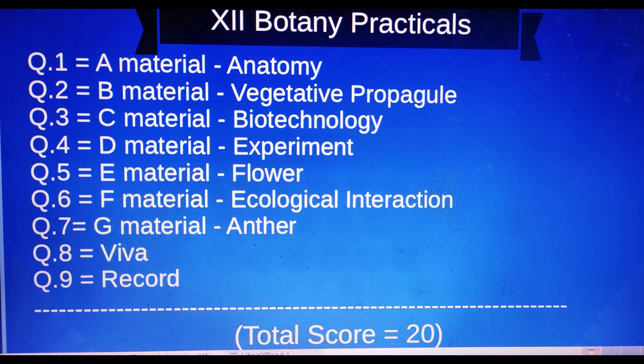The first question involves the diagram. The second question involves material B diagram. Question number four involves material D — the experiment diagram. Question number seven involves material G — slide diagram. So questions one, two, four, and seven all require diagrams — four diagrams in total. Draw them carefully.